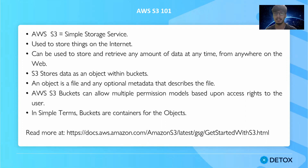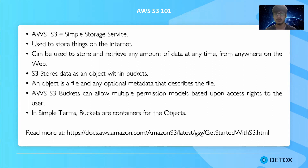AWS S3 buckets are basically Simple Storage Service, used to store data, files, and anything on the internet. They can store and retrieve any amount of data at any time from anywhere on the web. All you need is access to the AWS console or AWS CLI. S3 stores data as objects within buckets. A bucket is simply a storage place — like a hard drive for your local system.